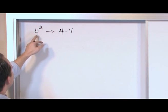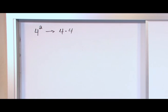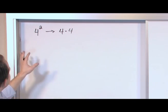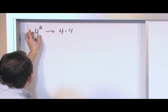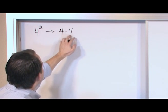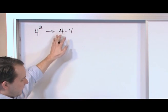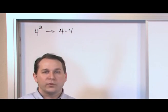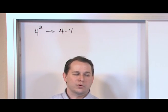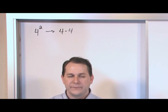So we call this four squared. Anytime you see a two up there, it means squared. It just means that you take the bottom number and you multiply it by itself as many times as is indicated in the exponent. So it's four times four. So in this case, four times four is sixteen. So four squared or four raised to the power of two is sixteen.